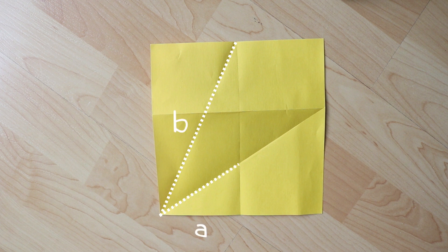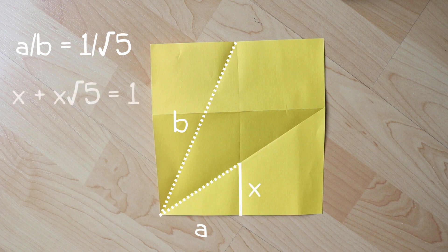Since the ratio of this segment to this segment is 1 over root 5, if we label this segment x, we have that x plus x times root 5 equals 1. Solving for x, we get that x equals 1 over 1 plus root 5.